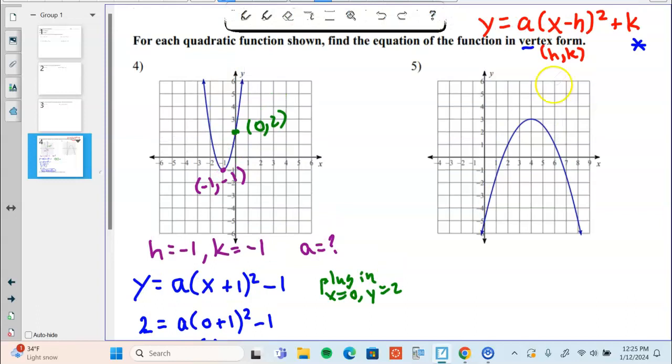First thing, find the vertex. Vertex is x equals four, y equals three. And that means my h is four, k is three. I'm going to write down what I have: y equals a times x minus h squared plus k.